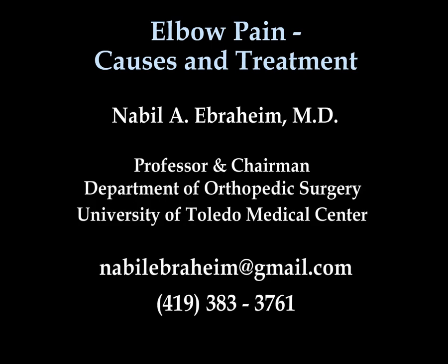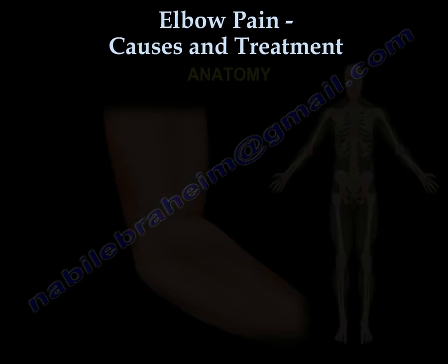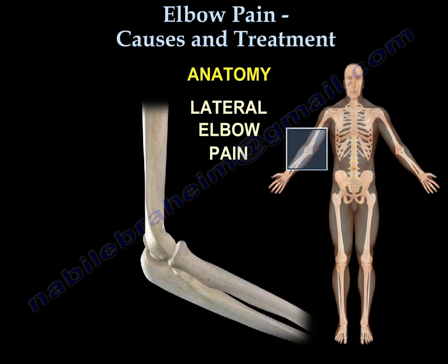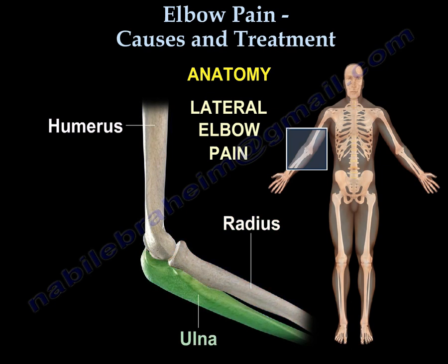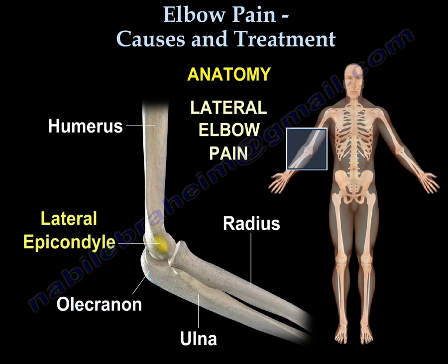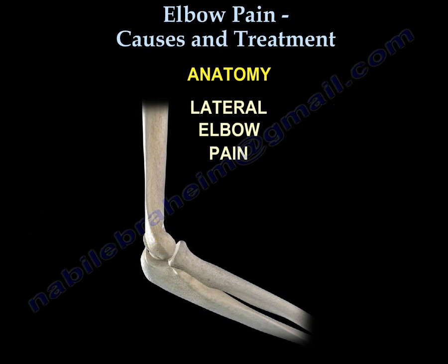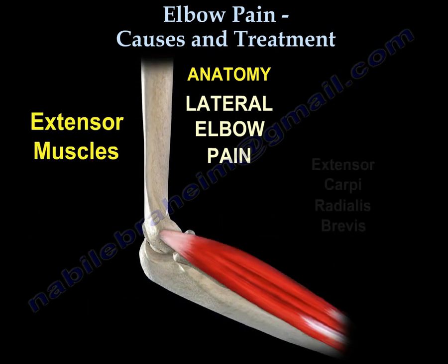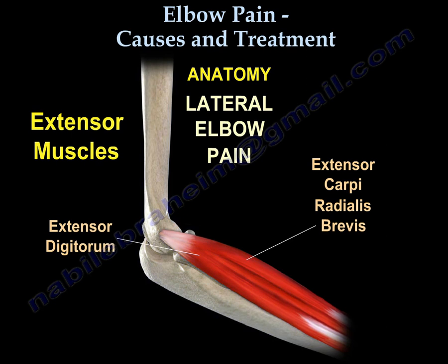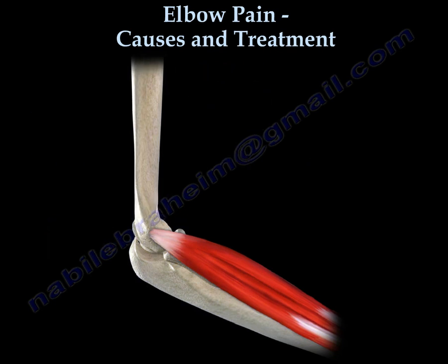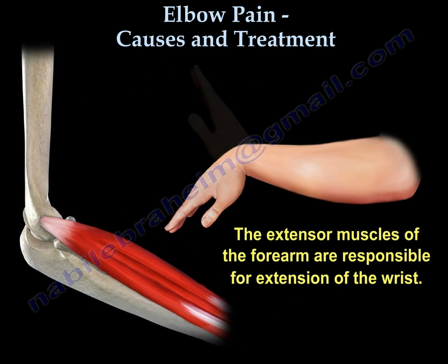Elbow pain: causes and treatment. For lateral elbow pain, the anatomy of the lateral side shows the humerus and the radius. The ulna is on the medial side, and the proximal end of the ulna is called the olecranon. The lateral epicondyle provides attachment to the extensor muscles of the wrist — the muscles responsible for extension of the wrist.